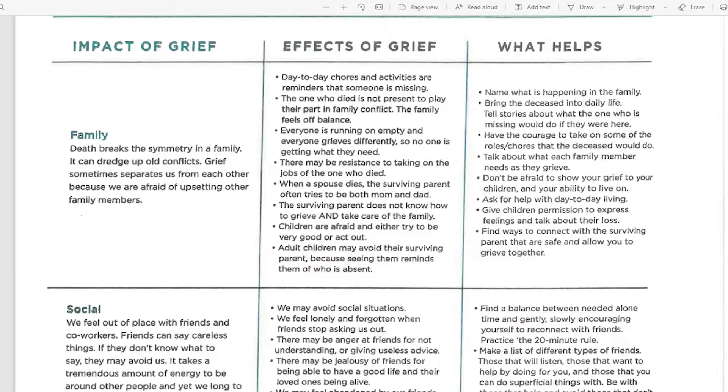There may be resistance to taking on the jobs of the one who has passed. When a spouse dies, the surviving parent often tries to be both mom and dad. The surviving parent does not know how to grieve and take care of the family. How do you do that together? How can I grieve but also have to continue to take care of children? Children are afraid and either try to be very good or typically act out. Adult children may avoid their surviving parent because seeing them reminds them of the parent they've lost.